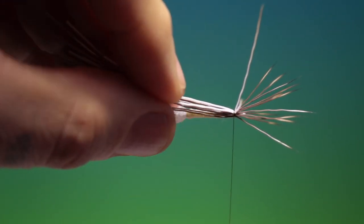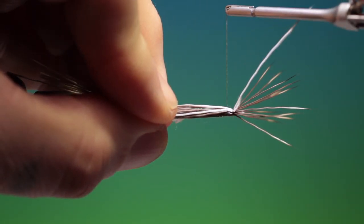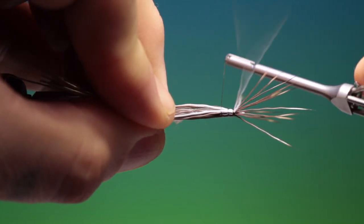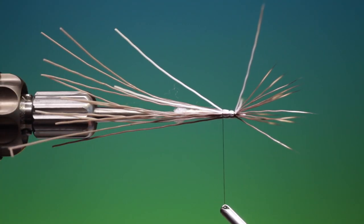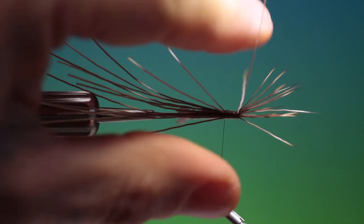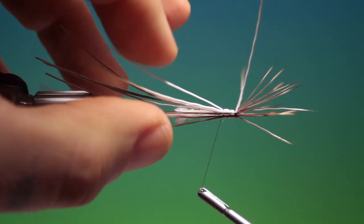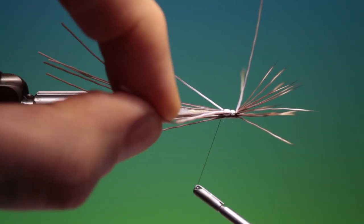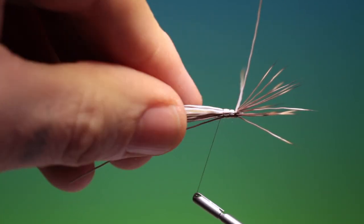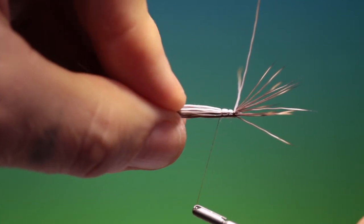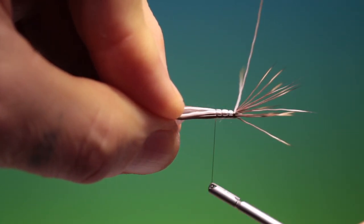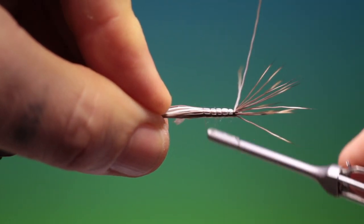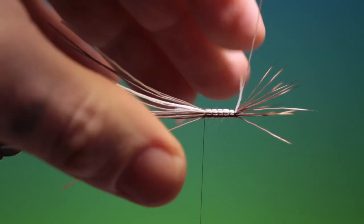Get all the hairs on top of the hook shank. And then we can segment the body. Make sure they're all nice and even. There we go. Keep the two white ones a little apart. And then we can go up and up, like so.